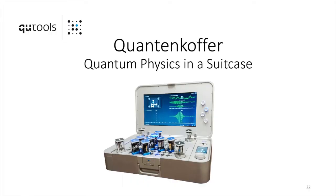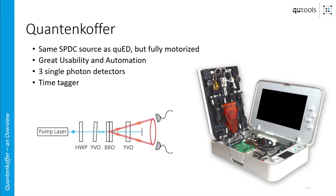After this detailed explanation of the Q-Add, let me briefly introduce the QuantumCoffer, our quantum physics in a suitcase experimental kit. Despite the obvious optical differences, the QuantumCoffer is essentially also a system that employs spontaneous parametric downconversion to create entangled photon pairs. It has basically the same source as in the Q-Add, but it looks a lot more complicated mainly because everything is fully motorized — from the half-wave plate to the Ivo crystals and the BBO crystal. You can also couple into the fibers via two mirrors that are fully controlled by motors.